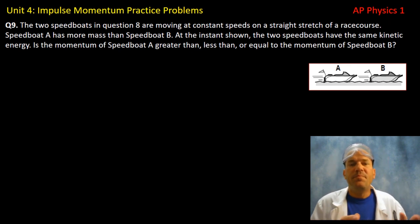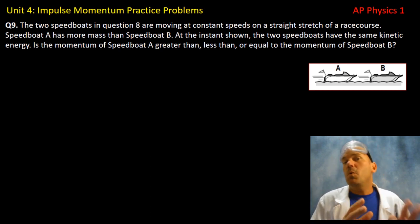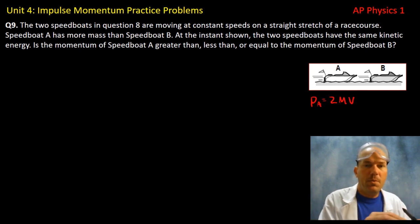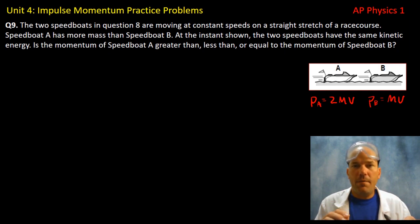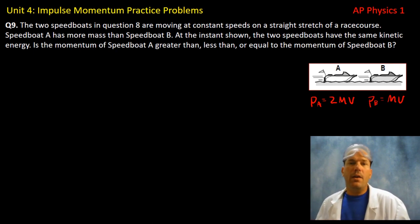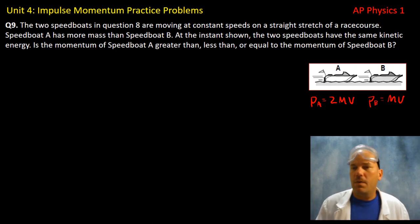Question nine uses the same two speedboats at constant speeds, but now we're explicitly told boat A has more mass than B. At the instant shown, both boats have the same kinetic energy. We're asked whether the momentum of A is greater than, less than, or equal to that of B.